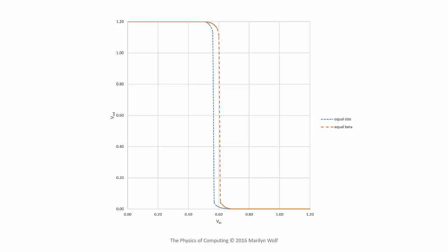When we increase the beta of the P-type transistor to be equal to that at a pull down, we see that the transfer curve moves to the right. So we can adjust the transition zone by adjusting the sizes of the transistors.